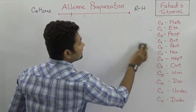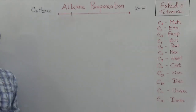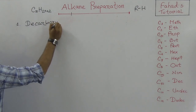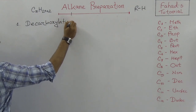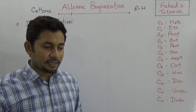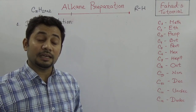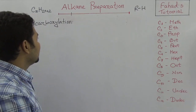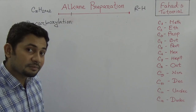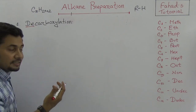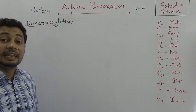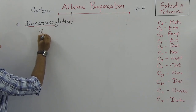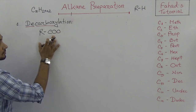Decarboxylation is the first process. It is a process by which we can synthesize alkane from sodium carboxylate with the reaction of soda lime. Two things are important: 'de' means one carbon will be less in the product compared to the reactant.